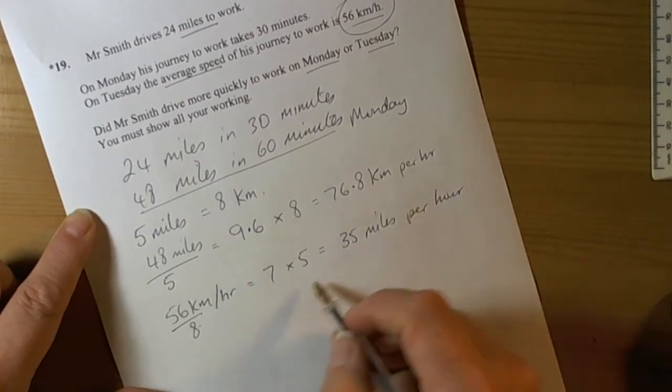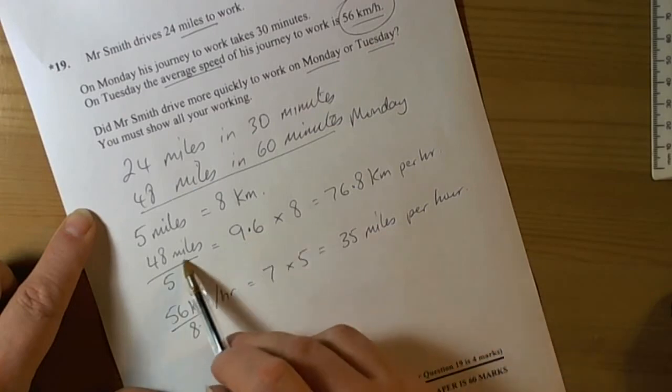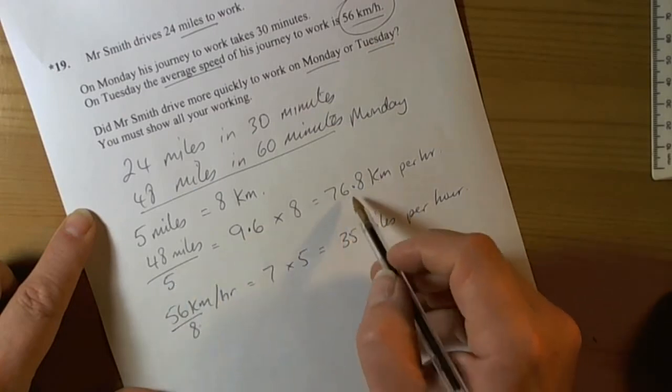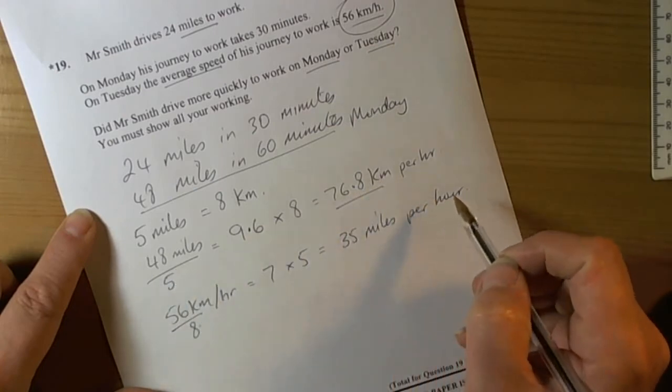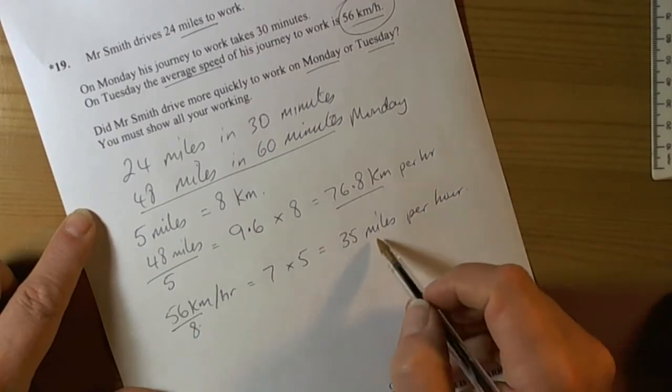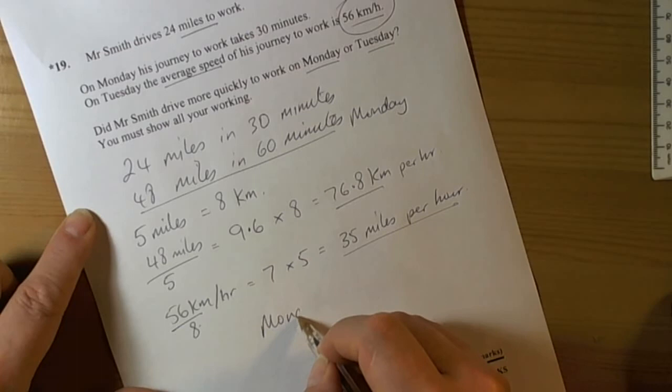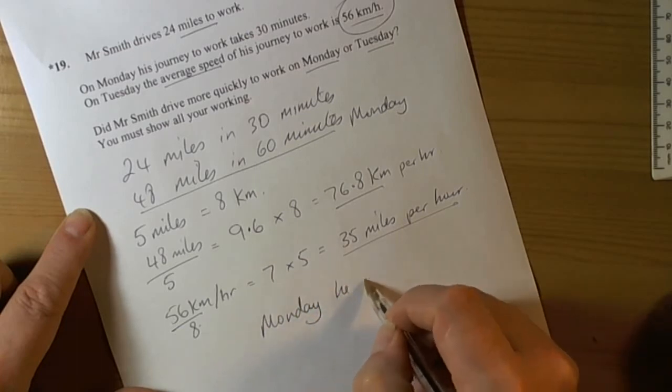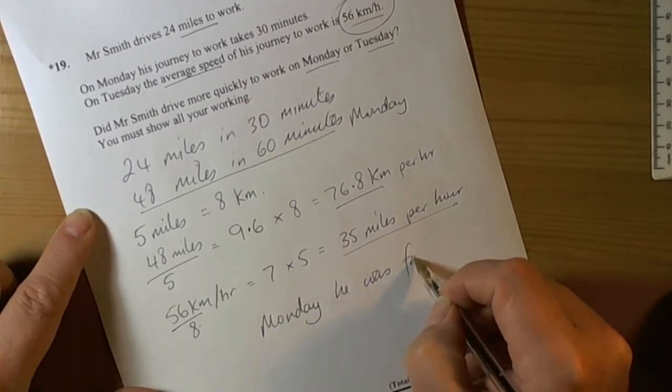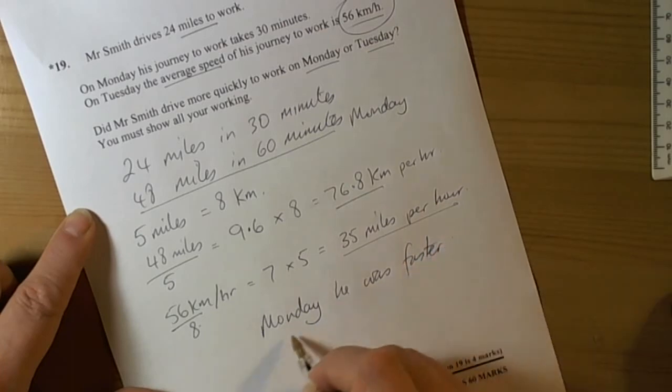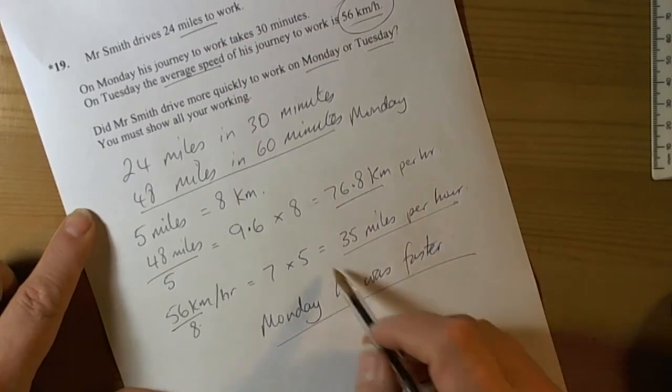So either way we can see that on Monday he was traveling faster, because he was doing 76 kilometers per hour, and on Tuesday he was only doing 35 miles per hour. So Monday he was faster. Remember, a star question, so we should finish off with a sentence to confirm our conclusions.